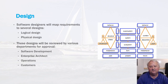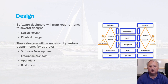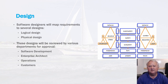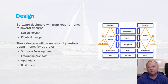The next step is the design phase. Software designers will map the requirements into several different types of designs. First, there'll be a logical design where the large-scale components of the system are mapped out, and then a physical design. These physical designs include things like database schemas, software modules, signatures, and those types of things. These designs will be reviewed by various different departments for approval, such as the software development department and the enterprise architecture division.